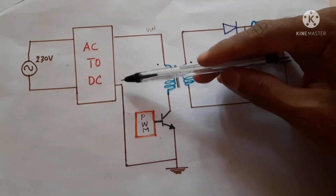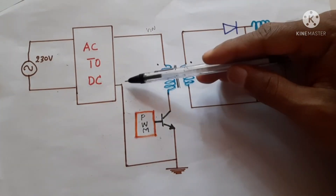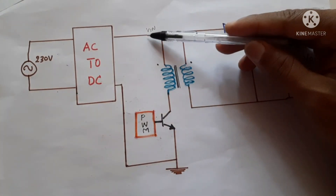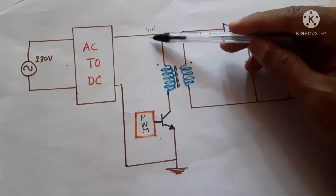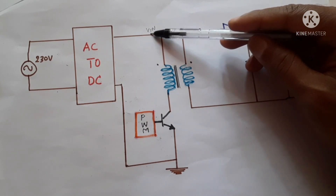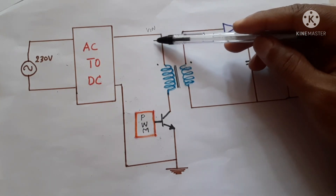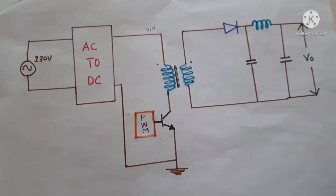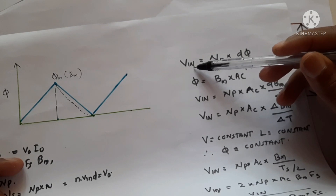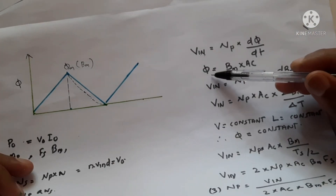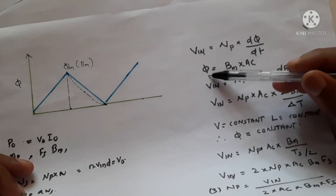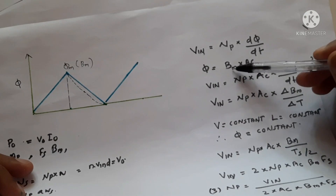When we rectify an AC voltage, there should be around 320 volts. So Vin should be around 320 volts after rectification. We already know that the flux term φ means Bm times Ac.